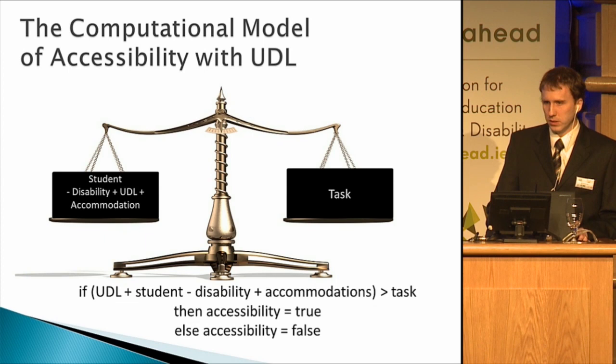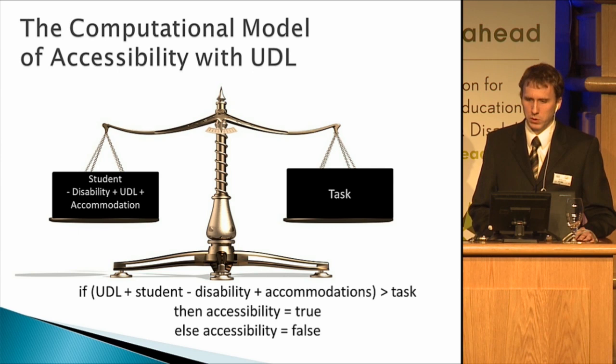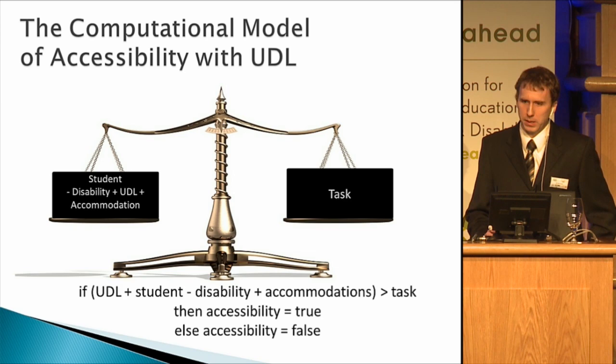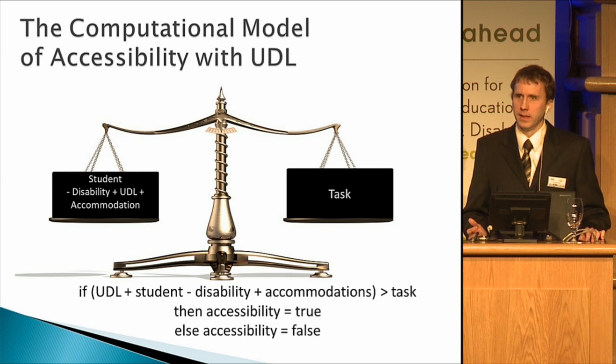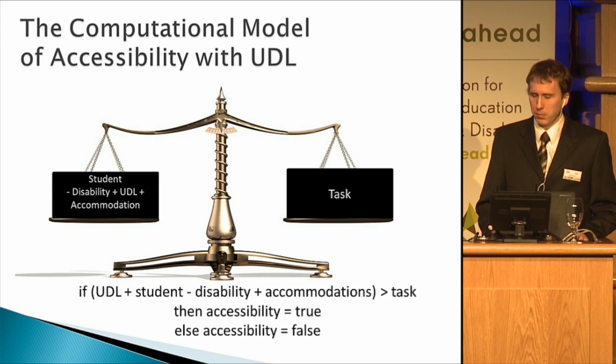How might this work in a universal design context? Everybody gets the benefit of the UDL design, so you start out providing that to all students. Then you add in the effect of the student, subtract out the effect of the disability, and you decide whether accommodation has happened. In many cases you may not need additional accommodation — that's the goal. Perhaps your UDL accommodation was an electronic text and a person likes Braille. Maybe there are ways that additional accommodation is needed beyond that. But it provides a way to fold UDL into how we might traditionally think about the process of accommodation.